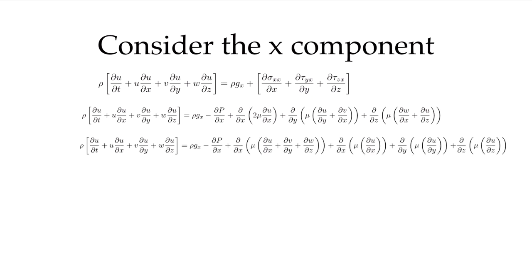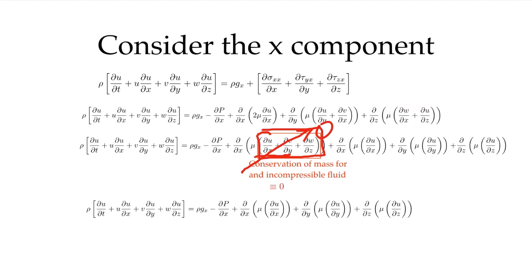Now we can rearrange this. Collecting like terms, we find this form, and you might notice this term is conservation of mass for an incompressible fluid, which means it's exactly zero. All those terms cancel out and we can simplify. Finally, we get this form with the inertia force here, the gravitational or body force, the pressure forces, and the viscous forces.